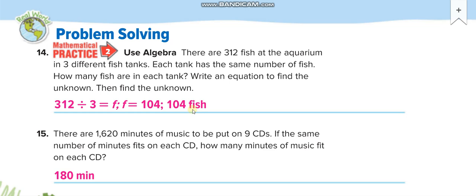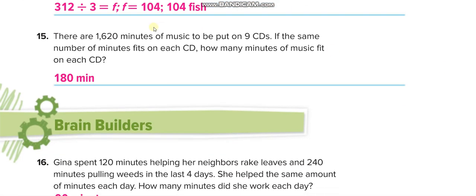There are 1620 minutes of music to be put on 9 CDs. So 1620 divided by 9 is 180 minutes. You can divide it like we did on the last page here on the side.